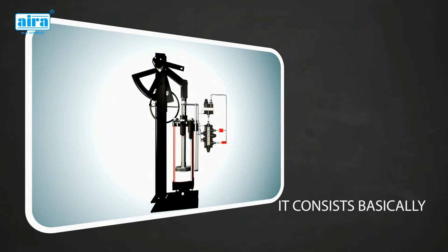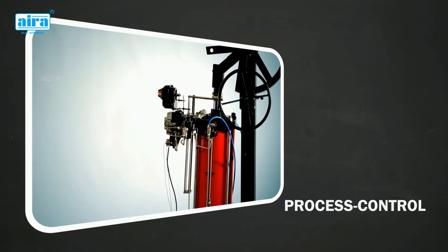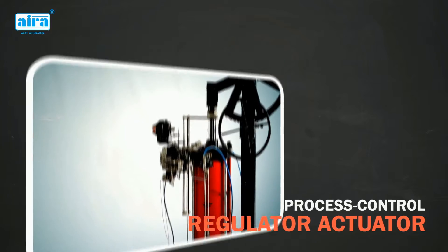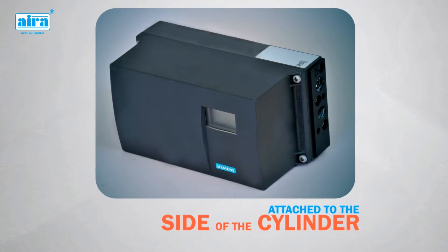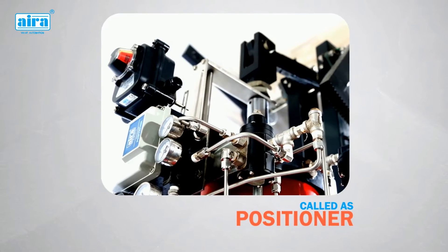It consists basically of a cylinder and piston. Process control regulator actuator with a position control unit attached to the side of the cylinder is called a positioner.